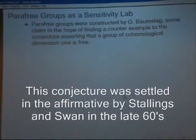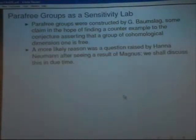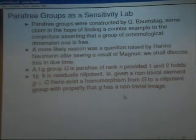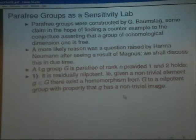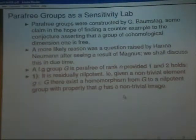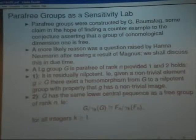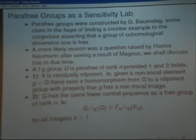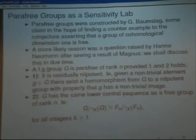So let's actually go and look at this. Para-free groups were constructed by Gilbert Baumslag. Now, some claim in that hope of finding a counterexample to the conjecture asserting that a group of homological dimension one is free, but this is false. Actually, this is on the internet somewhere in many places, in fact. A more likely reason was a question raised by Hannah Neumann after seeing a result of Wilhelm Magnus that we shall discuss in due time. And Gilbert told me this.